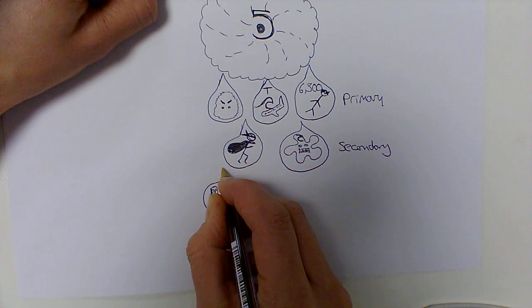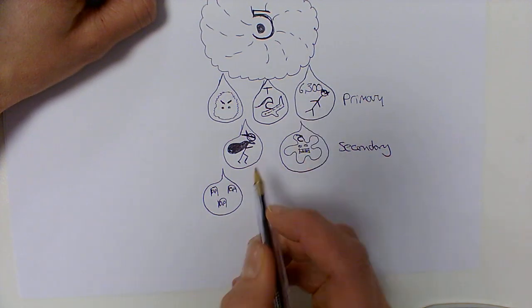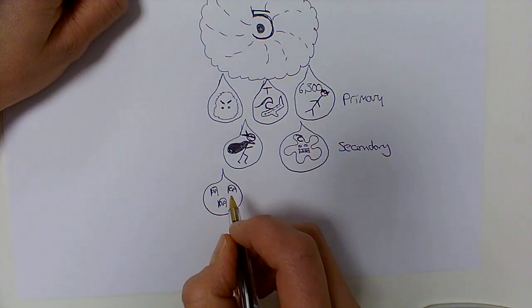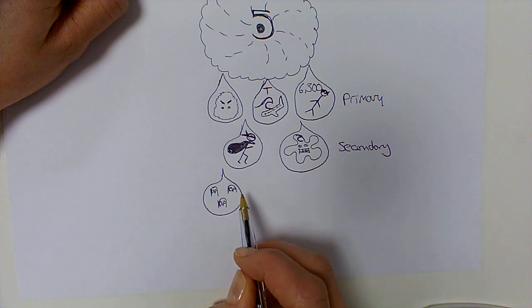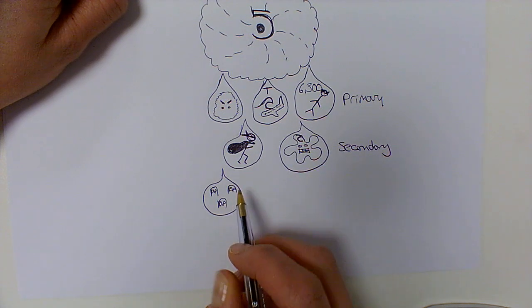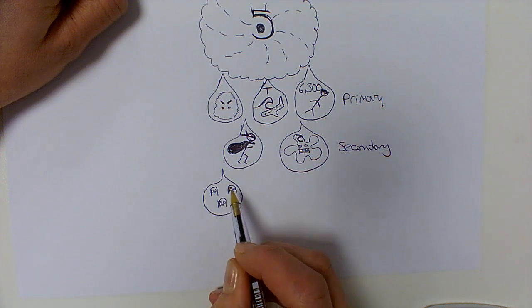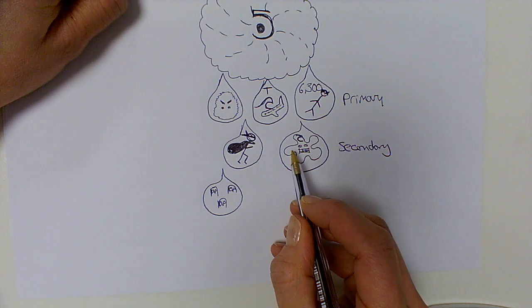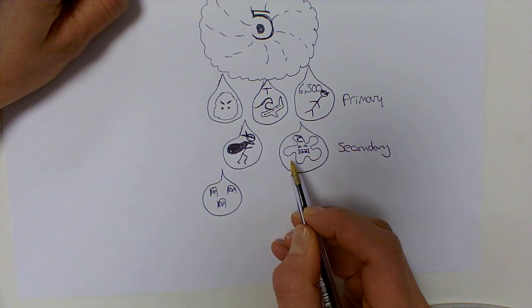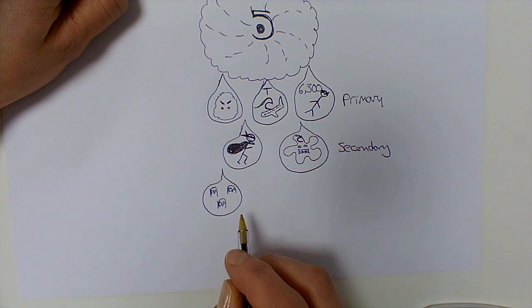Because so many people had died, large mass graves were dug so that the impacts of spreading disease could be limited. This meant that many more people didn't die because they had buried the bodies very quickly so the water didn't become too contaminated. However, there was some cholera, which meant this wasn't as effective as it could have been.